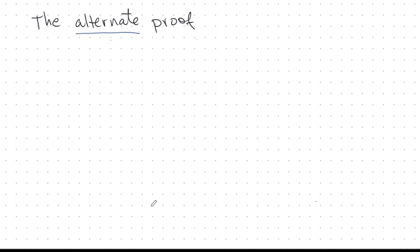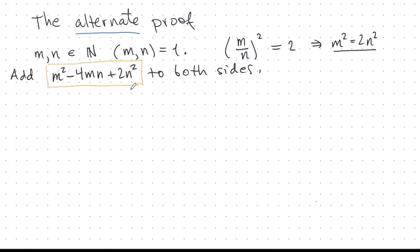The alternate proof begins much the same way as the classical proof. M and N are positive integers or natural numbers. We can assume that the GCD of M and N is 1 because we want the fraction to be reduced. Any rational can be reduced to its most reduced form. We assume it's possible to have a rational root of 2. Then this equation would be true and we end up with M squared is 2N squared. So far it's the same. But now the proof starts to get different and very interesting in its own way. We have a magic factor that we will add to both sides. We add M squared minus 4MN plus 2N squared to both sides of this equation.